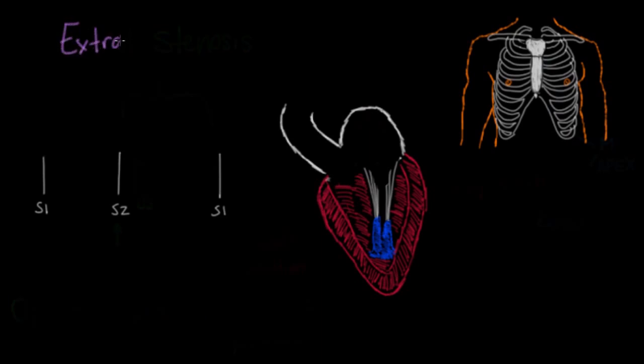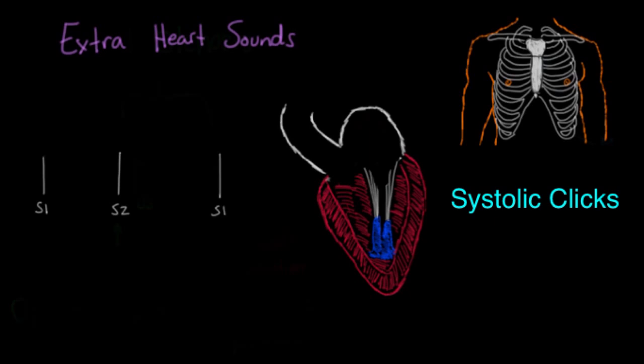The last topic is extra heart sounds. We've actually covered two types already: the click — which can be an ejection click associated with aortic stenosis, or a non-ejection click later in systole associated with mitral valve prolapse — and the opening snap, associated with mitral stenosis.